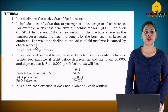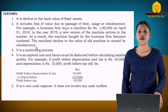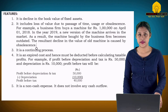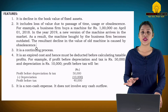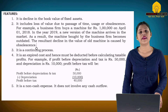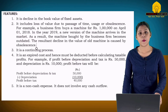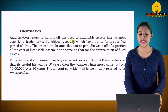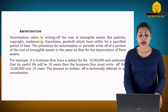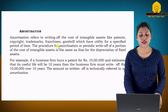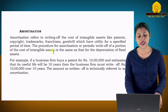The next term is amortization. When we calculate depreciation, we can calculate it for fixed assets as well as for intangible assets. Intangible assets are those which we cannot touch or which have no physical existence, such as patents, copyright, and goodwill. Amortization refers to the writing off of the cost of intangible assets — like patents, copyright, trademarks, franchises, and goodwill — which have utility for a specific period of time. The procedure of amortization, or periodic write-off of a portion of the cost of intangible assets, is the same as that for the depreciation of fixed assets.